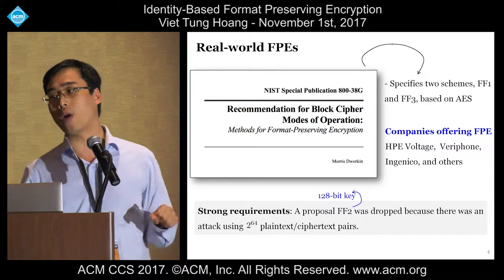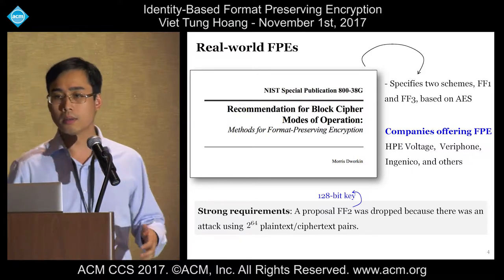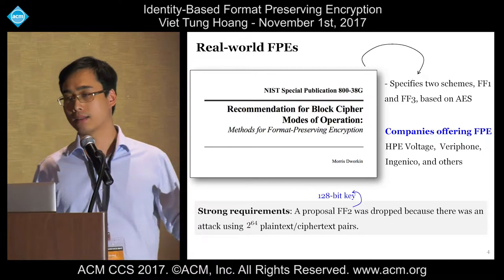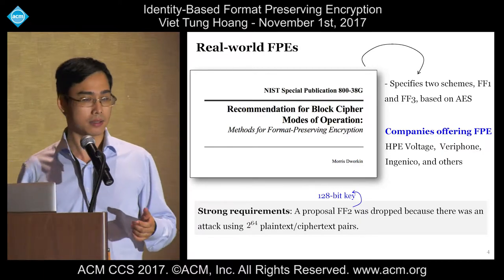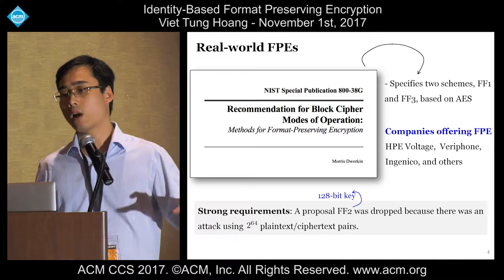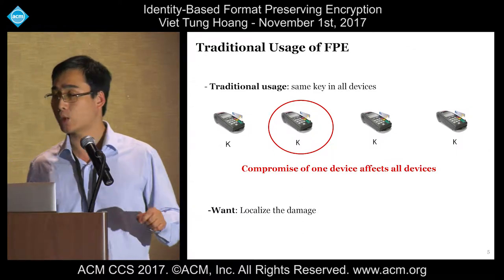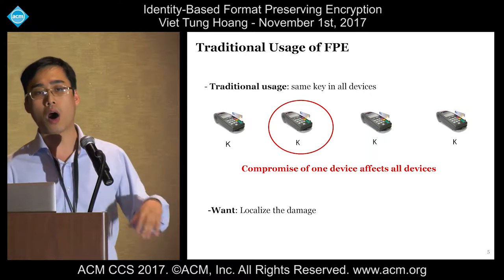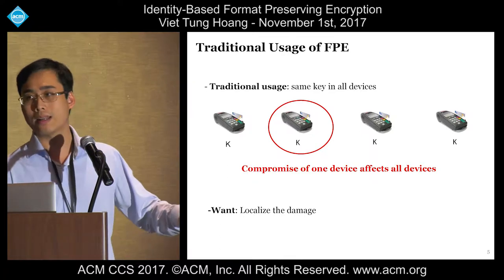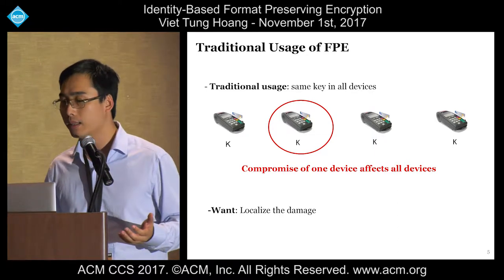The standard insists on very strong security requirements. An earlier version had a proposal FF2, but it was dropped because the NSA found an attack requiring only 2^64 plaintext-ciphertext pairs, despite the 128-bit key length. Under traditional uses of FPE, devices of the same organization share the same key. But if one device is compromised, which is quite likely, the security of all devices is affected. This is highly undesirable, which motivates us to localize the damage. Therefore, we propose Identity-Based FPE, or IBFPE.